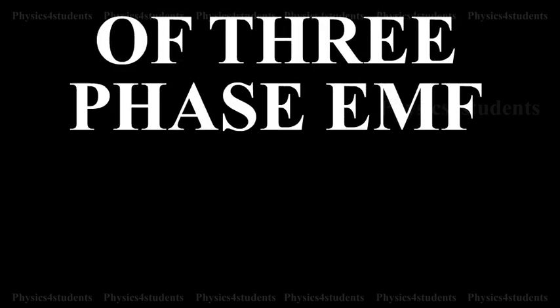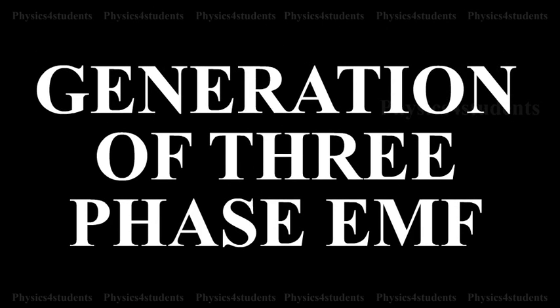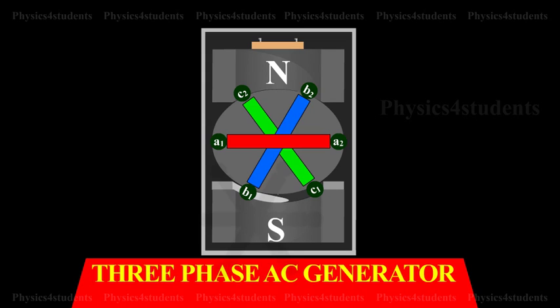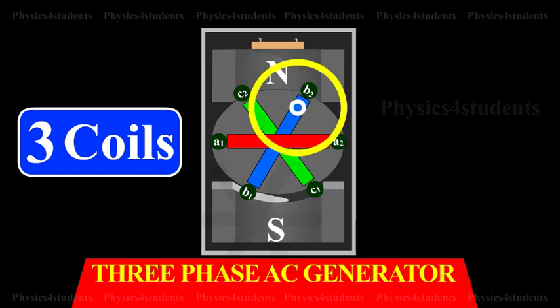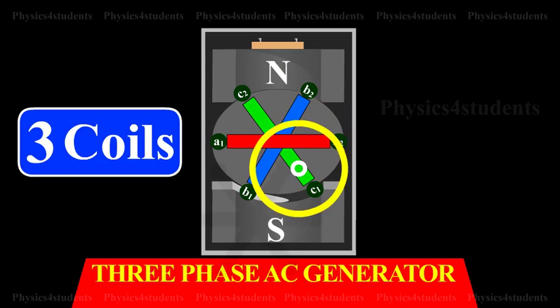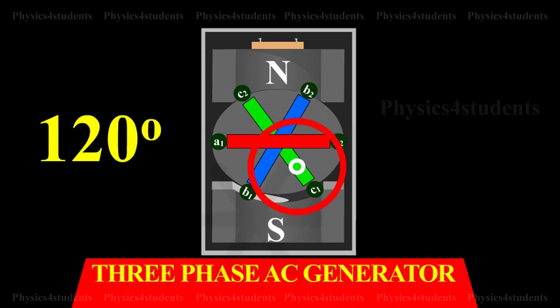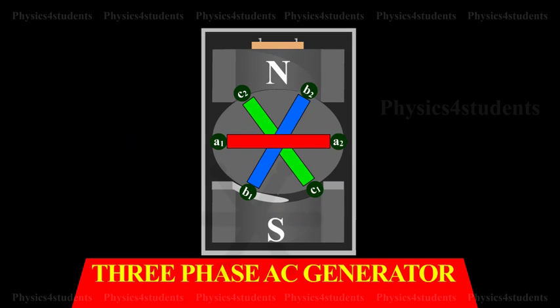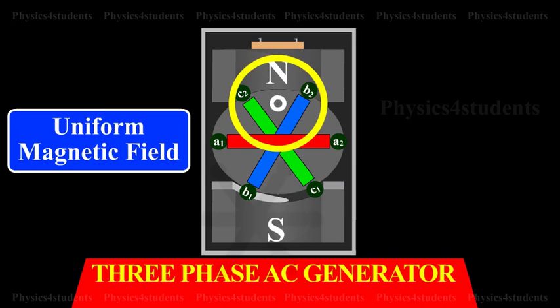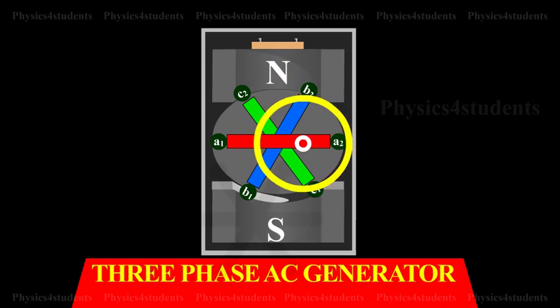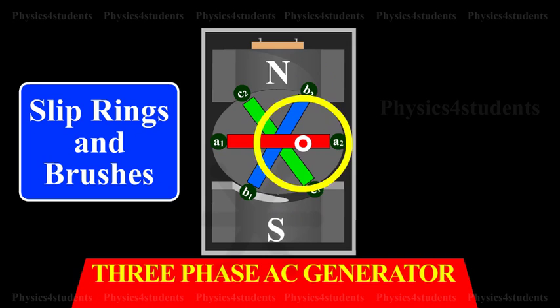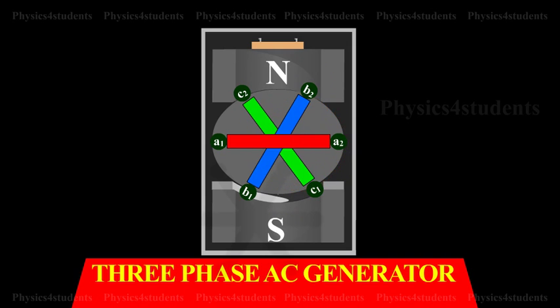Generation of three-phase EMF: Each of the coils has a phase difference of 120 degrees.